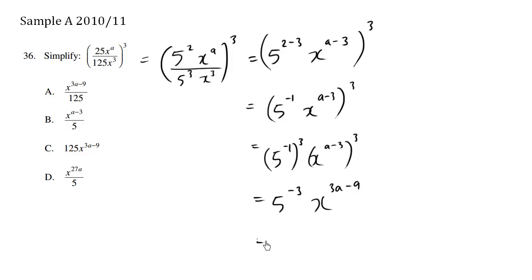So to finish this off here, we have 5 to the negative 3, which is the same thing as 1 over 5 to the 3. And then we keep this in the numerator, x to the 3a minus 9, and 5 to the 3, when I look at the available choices, it's the same thing as 125. So the only choice that's correct is A.